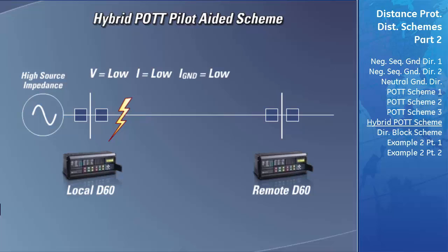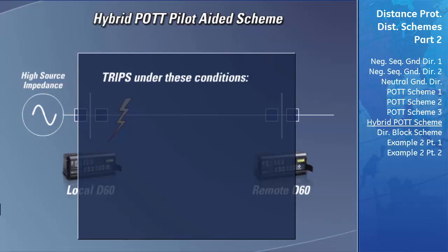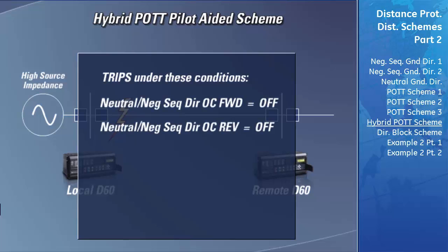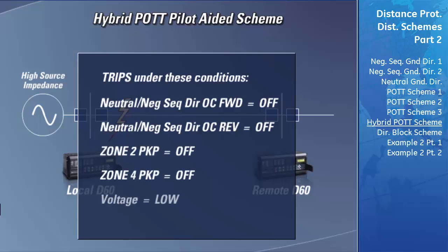Also, the zero sequence and negative sequence current will be almost zero, so the forward and reverse ground directional overcurrent elements will not operate. Even though none of the D60 protection elements have picked up a fault, the faulted line still needs to be cleared. The hybrid POTT scheme handles this by identifying that if no forward or reverse directional overcurrent elements have picked up, no faults are detected in zone 2 or zone 4, and the relay detects voltage has dropped close to zero, then the fault is being supplied by a weak source. If all five conditions are met, the hybrid POTT scheme will force the D60 to trip the breaker if permission is received via a hybrid POTT key and the weak infeed feature is enabled. The line pickup protection element must be enabled and configured if this feature is to be used.